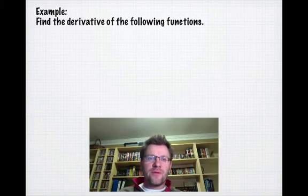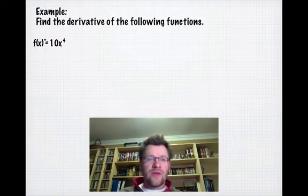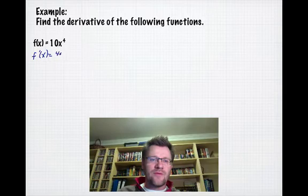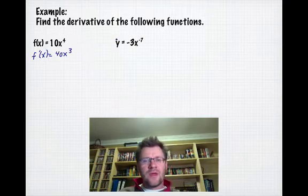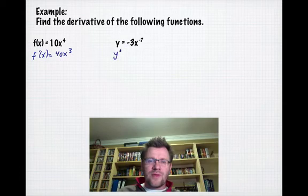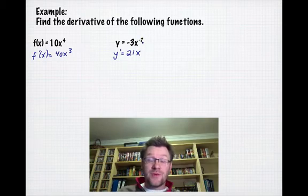Here are some examples. We'll take the derivative of the following functions. First, f(x) = 10x⁴. We take the exponent, bring it down in front, multiply by 10 to get 40, then subtract 1 from the exponent: f'(x) = 40x³. Next, with a negative exponent, when we bring it down it multiplies by the negative 3 already there, giving positive 21. When subtracting 1 from -7, make sure you actually subtract, giving -8.